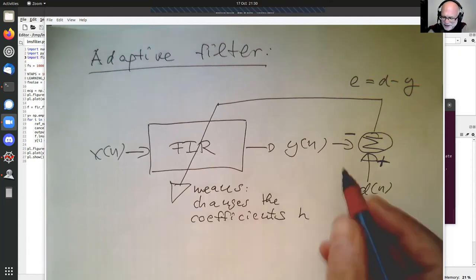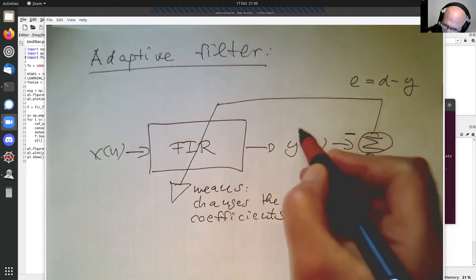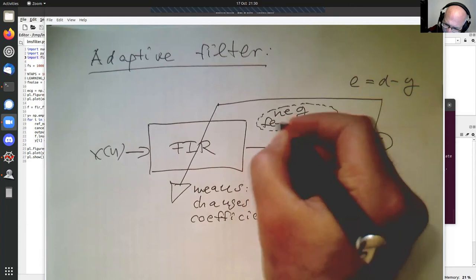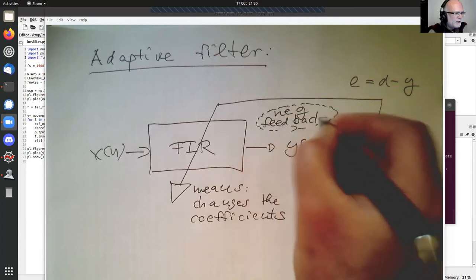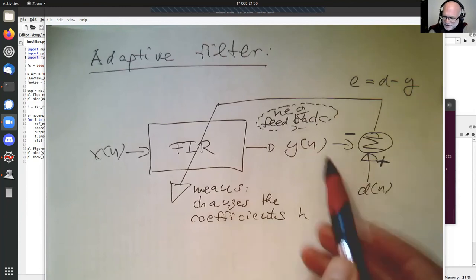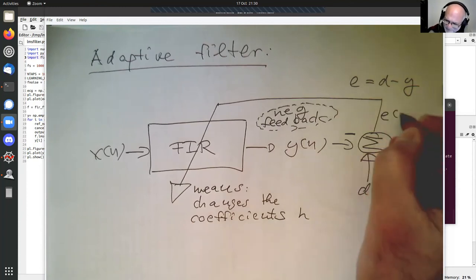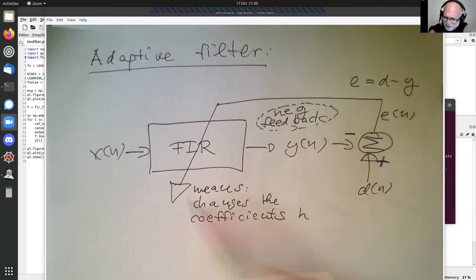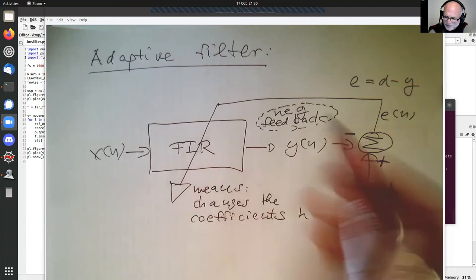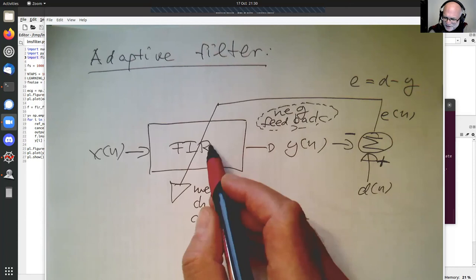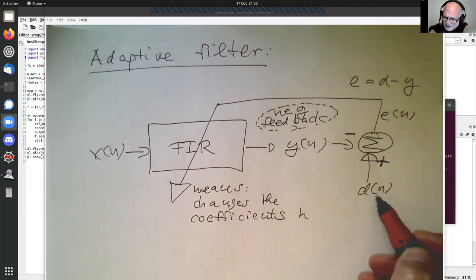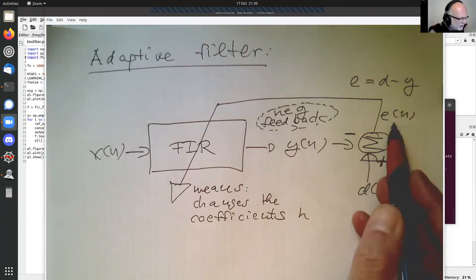And so we have here a negative feedback loop. So that's a negative feedback loop. And so the error signal E here, E of N, will be changed in the way that at some point it will be zero. The error signal manipulates the FIR filter so that Y is changing, and eventually the difference between D and Y becomes zero, and the error signal converges.